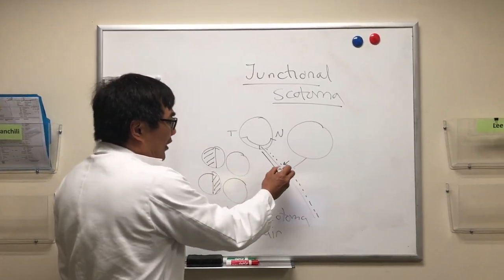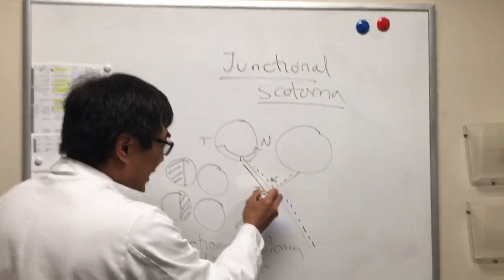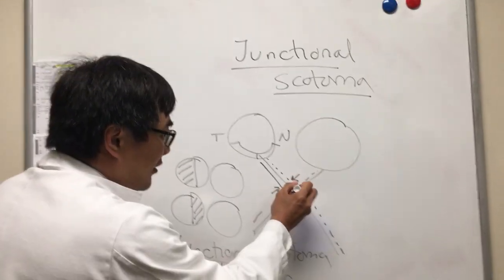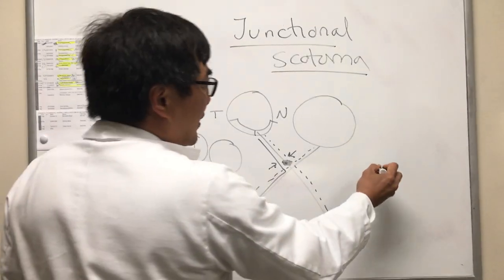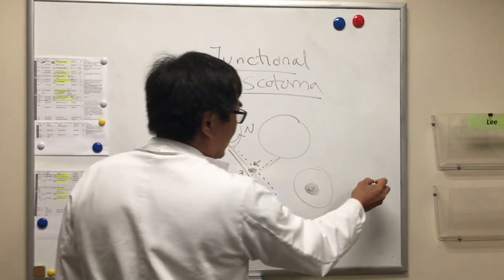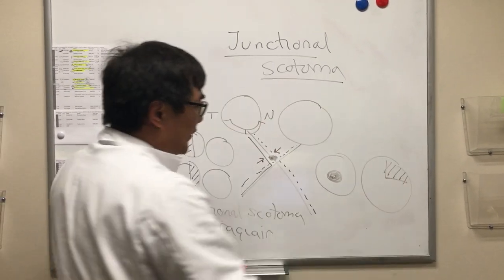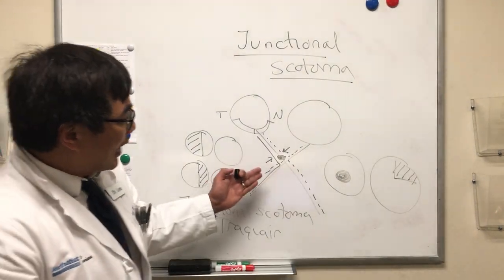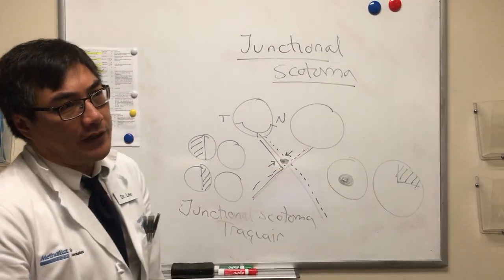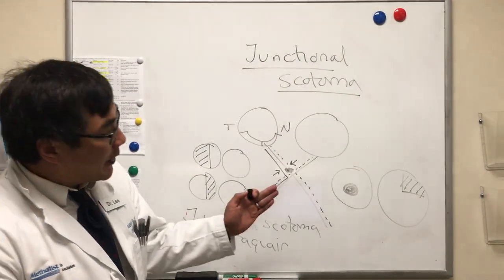In addition, however, a lesion at the junction of the optic nerve and chiasm could affect the nasal crossing fiber from the other eye. And that means you could get an optic neuropathy field in one eye, like central scotoma, but because there's involvement of the inferonasal crossing fiber from the fellow eye, that will produce a superior temporal field defect because of involvement of the inferonasal fiber from the fellow eye.